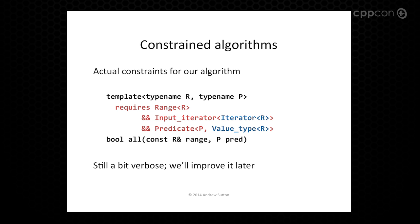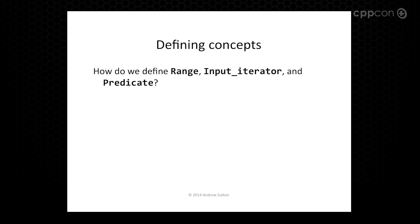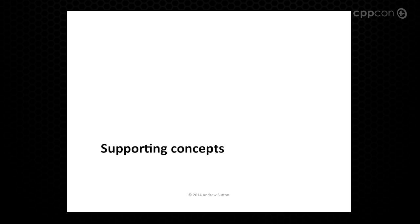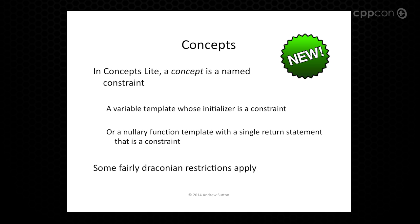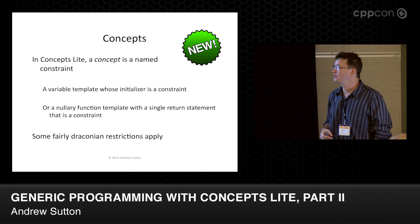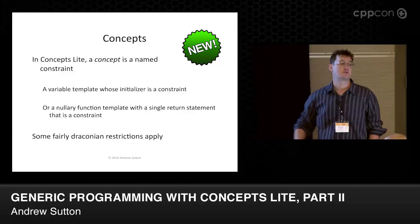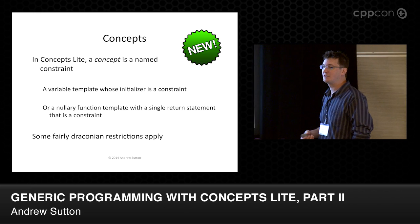Still a bit verbose — we'll work on this as we go. So, the question is how do we actually define these things? Fortunately, we provide language support for this — we are not doing type traits today. We actually did end up adding language support to help you define these things. In ConceptsLite, a concept is simply a named constraint. It's basically one of two things: a variable template whose initializer is a constraint expression, or a nullary function template with a single return statement that's also a constraint expression. We have some fairly draconian restrictions on these things.